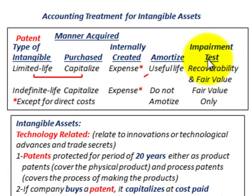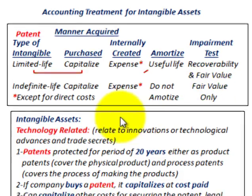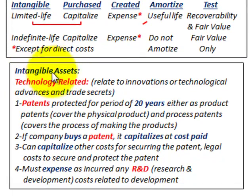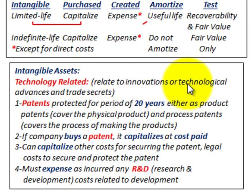There's also impairment testing, but we're not going to have any impairment to this patent in this case, so we'll ignore that. Technology-related intangible assets are related to innovations, technological advances, and trade secrets.